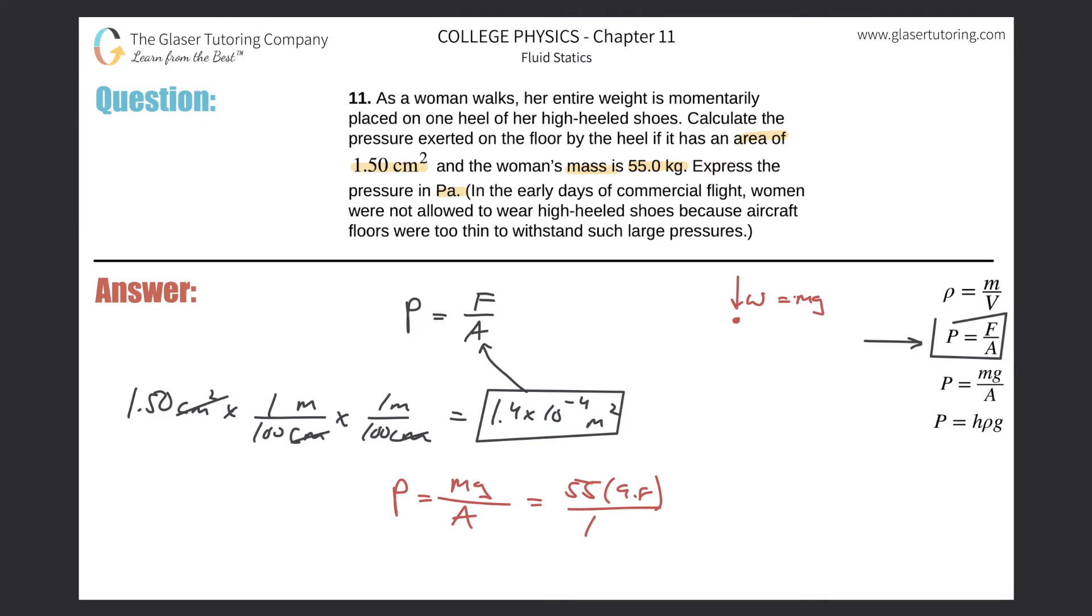Hold on one second. I don't know how I got 1.4, should be 1.5, right? Oh man, I'm catching my mistakes as I go. So this is 1.5 times 10 to the minus 4. So 55 times 9.8 all divided by 1.5 times 10 to the minus fourth, and we get a value of about 3.59.